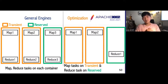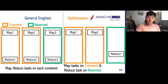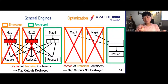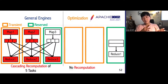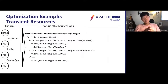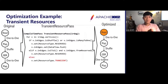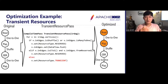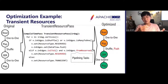In a simple MapReduce application, map tasks with no parent tasks are considered less valuable and placed on transient containers, while reduce tasks dependent on multiple map tasks are more valuable and placed on reserved containers. General engines place tasks without distinguishing container types, whereas our optimization places tasks according to their valuability. If an eviction occurs in transient containers during a data shuffle, data is lost in general engines while our optimization safely keeps data on reserved containers, preventing cascading recomputations. This optimization can also be implemented with just a few lines of code, tagging vertices topologically with transient or reserved containers.